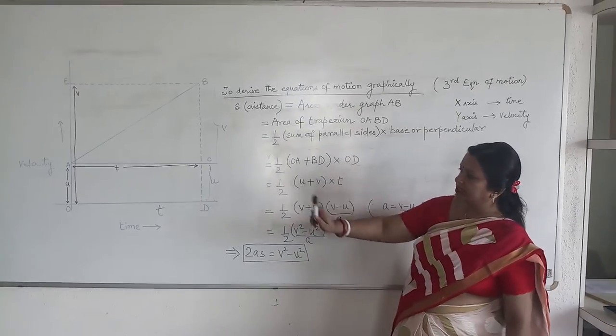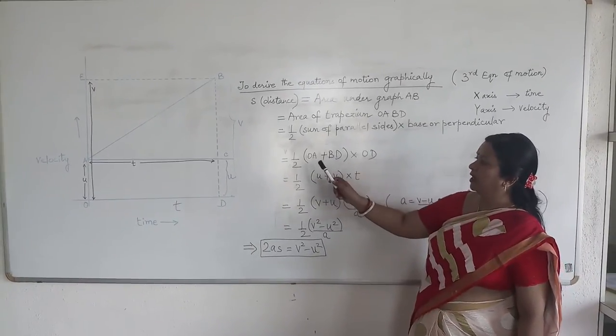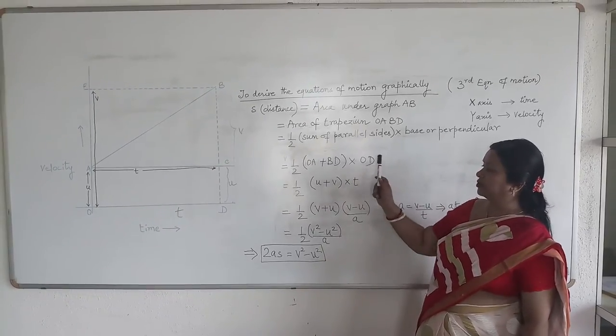So half OA you can see from the graph is U. BD is V. OA is U and BD is V and OD is T. So we substitute that.